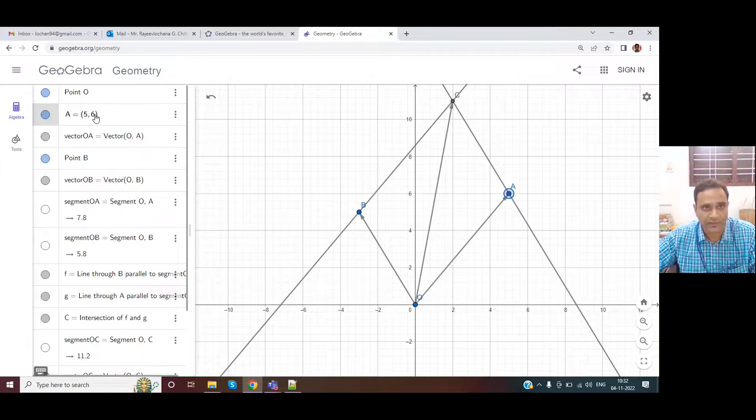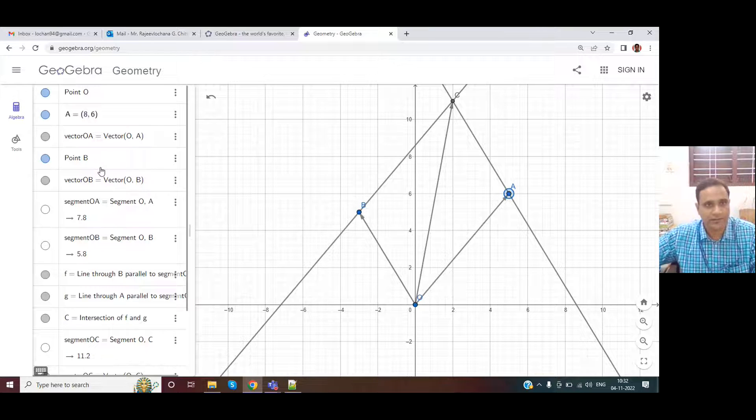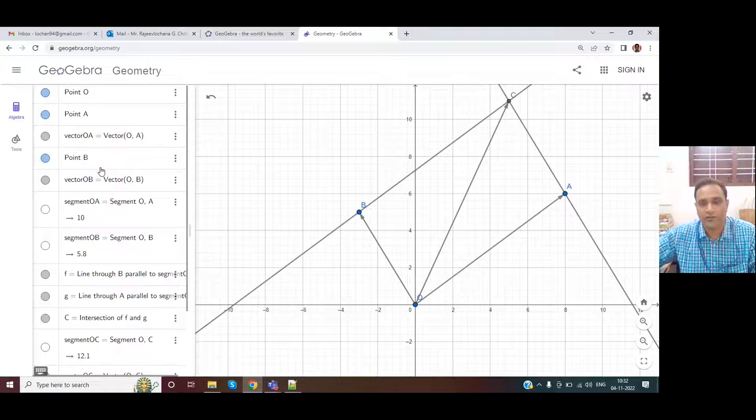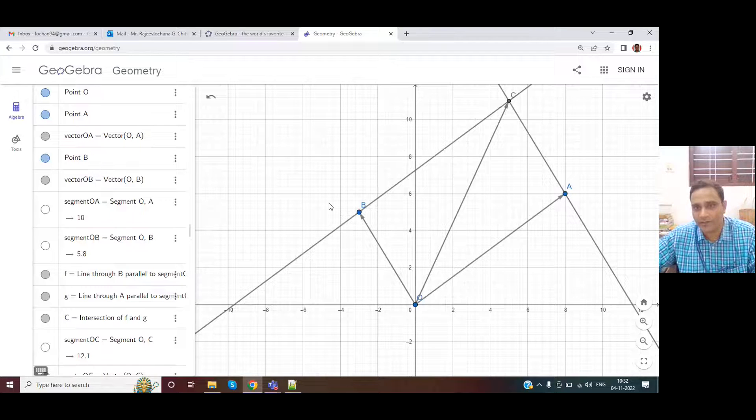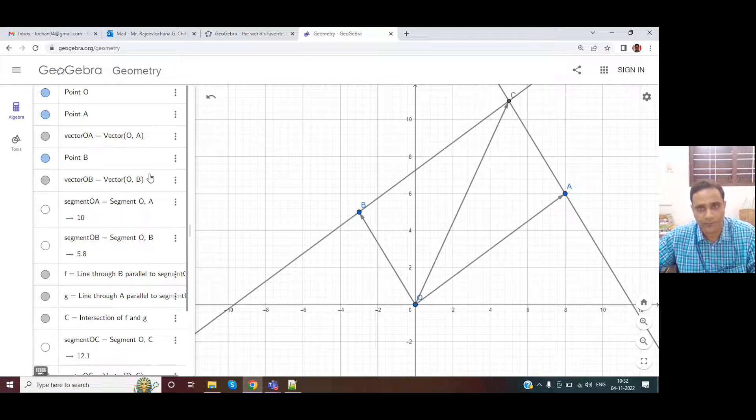Now what happens if I change the values? If I make it 8 comma 6. You can see one of the vector got updated. The other one was same. The parallelogram got updated.